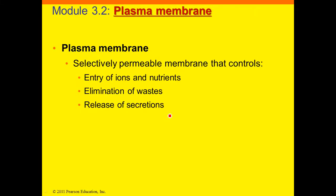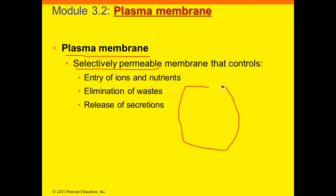Now let's look at the structures in somewhat more detail. We have the plasma membrane — the membrane that surrounds the cell and can also divide within the cell. We say that it's selectively permeable, meaning it serves as a gatekeeper allowing some materials to pass in or out of the cell and blocking others. It can also change its behavior from time to time.